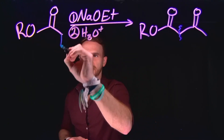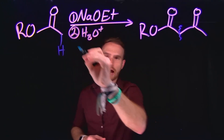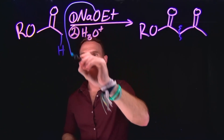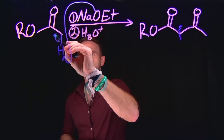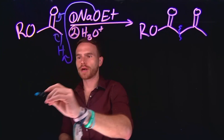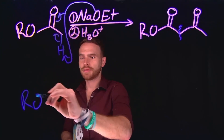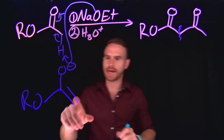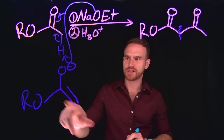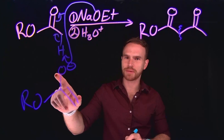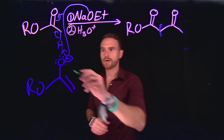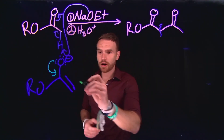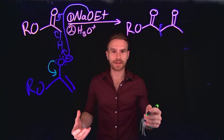The first step in a Claisen condensation is deprotonation of an alpha carbon hydrogen by a strong base like sodium methoxide, and in doing so, this generates what we know as the enolate intermediate, where we have formed an alkene at this position, and now the oxygen bears a negative charge. From here, these pi electrons can come down and kick off these pi bonds to attack an electrophilic carbon.